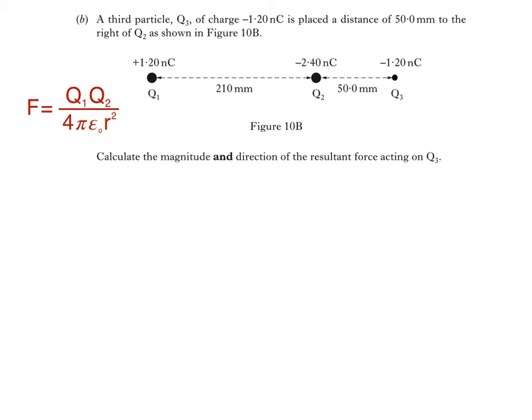Now we'll call the force experienced by Q3 due to Q1 F13. It's a force of attraction to the left, since the charges have the opposite sign. We'll then call the force experienced by Q3 due to Q2 F23, which is a force of repulsion to the right, since both Q2 and Q3 are negative.